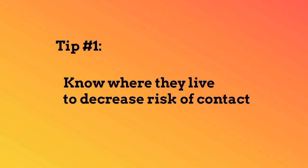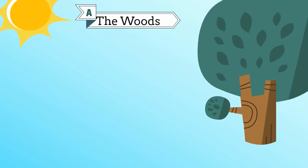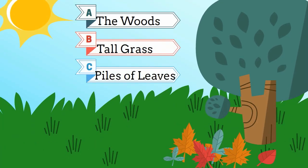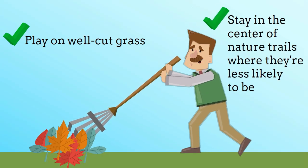Know where they live to decrease risk of contact. Ticks like warm dark places like the woods, tall grass, or piles of leaves. So play on well cut grass and stay in the center of nature trails where they're less likely to be.